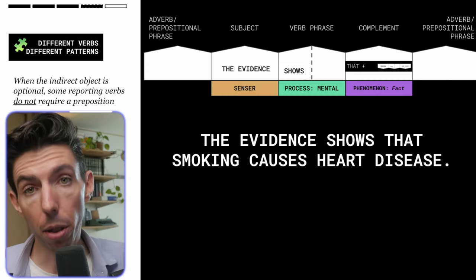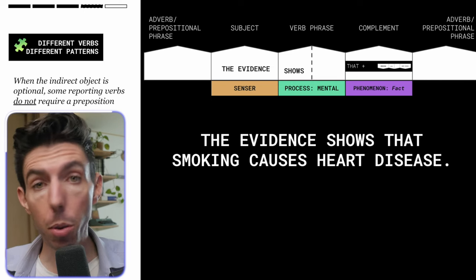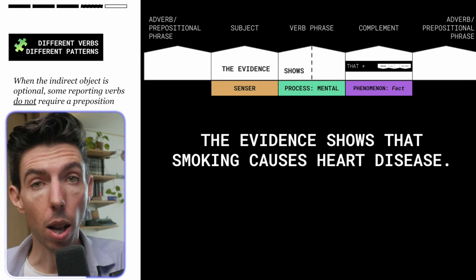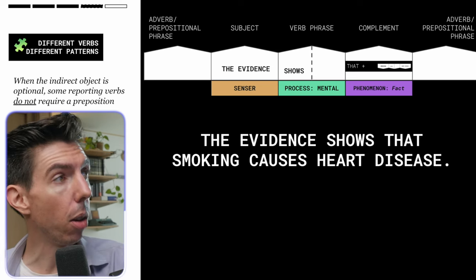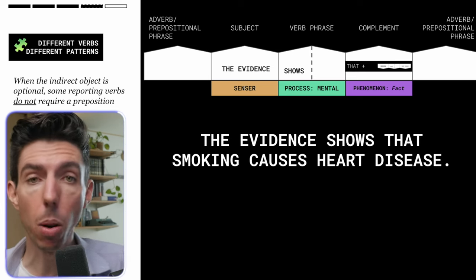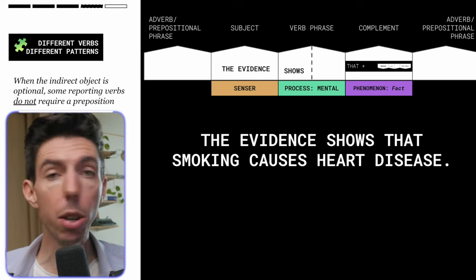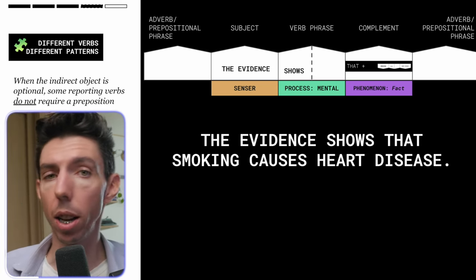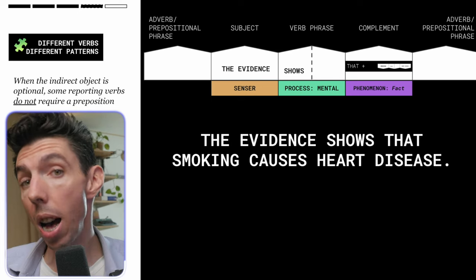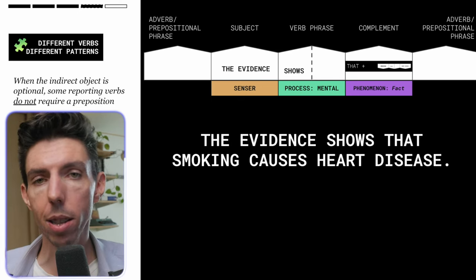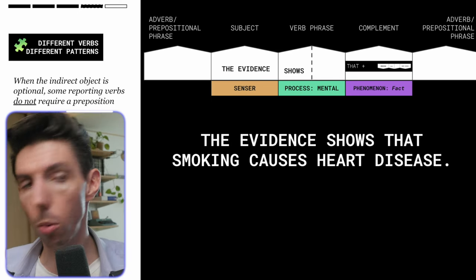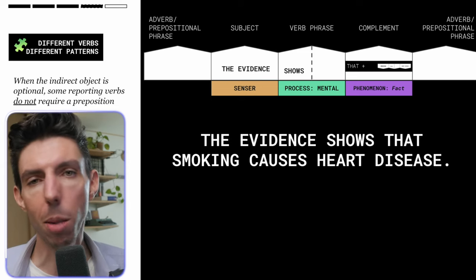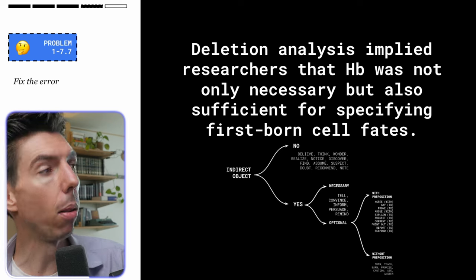A good example is the verb 'show.' You do not need an indirect object — the evidence can just show that smoking causes heart disease. However, you can include an indirect object without a preposition: 'The evidence shows us that smoking causes heart disease,' or 'the evidence shows the readers that smoking causes heart disease.' You don't need a preposition there. Let's test this out — use the roadmap below and look at the practice sentence.